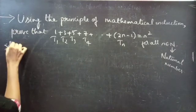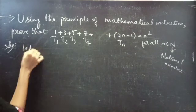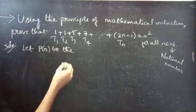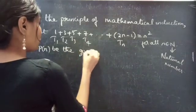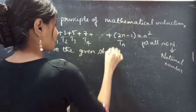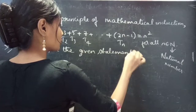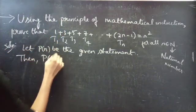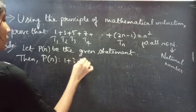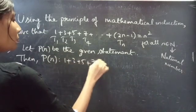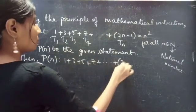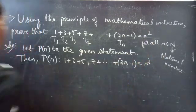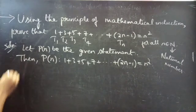Solution: Let P of n be the given statement. Then P of n is such that 1 plus 3 plus 5 plus 7 plus so on plus 2n minus 1 equals to n squared. Now the procedure begins.